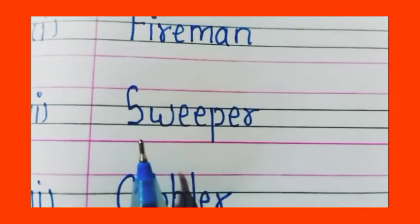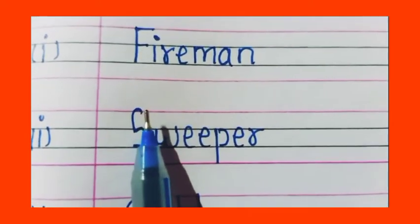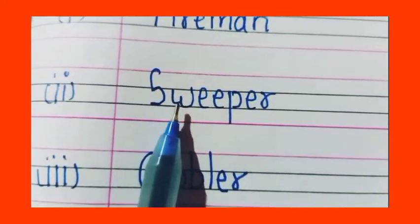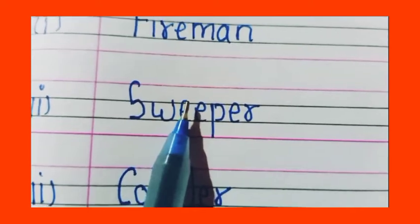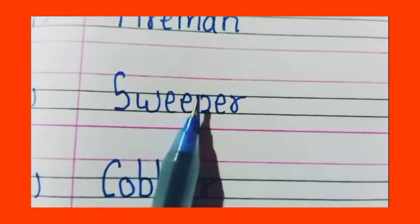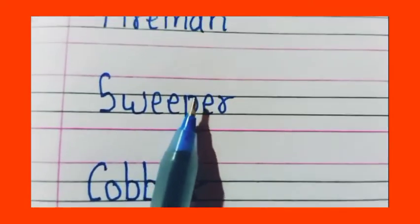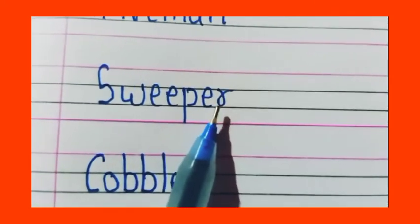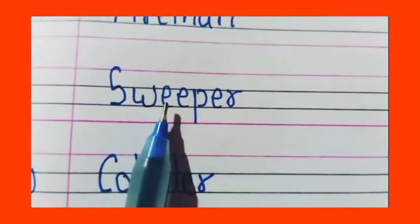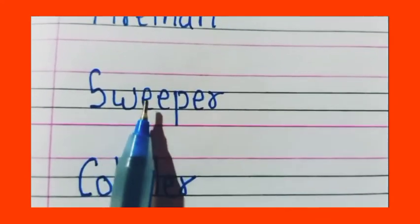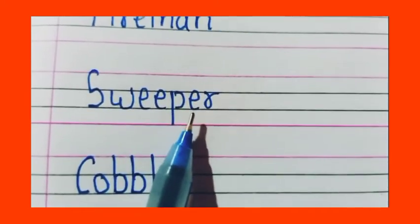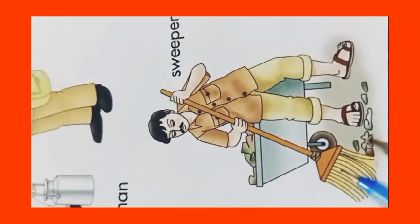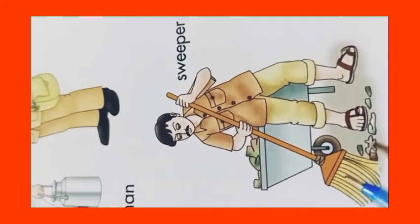Now our next word is sweeper. Sweeper, sweeper, how do you write? See, capital S, W, E, E, P, E, R. Sweeper, S-W-E-E-P-E-R, sweeper. See student, he is a sweeper to clean the roads and streets, okay?